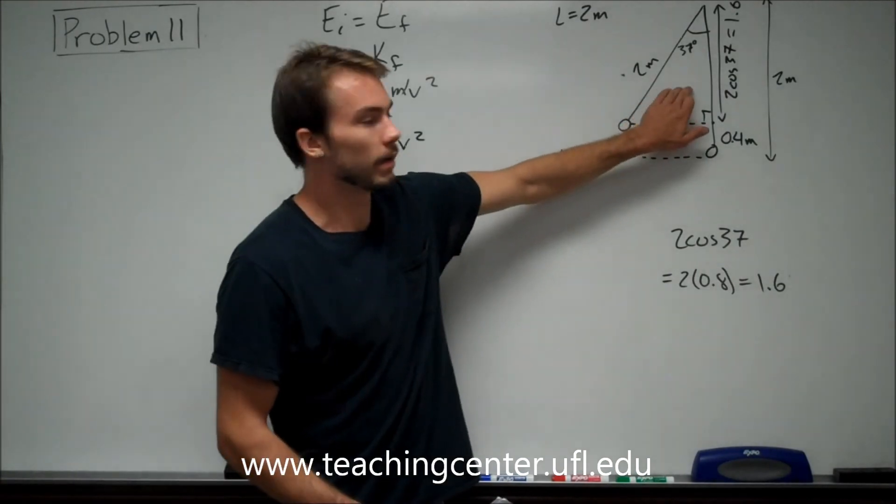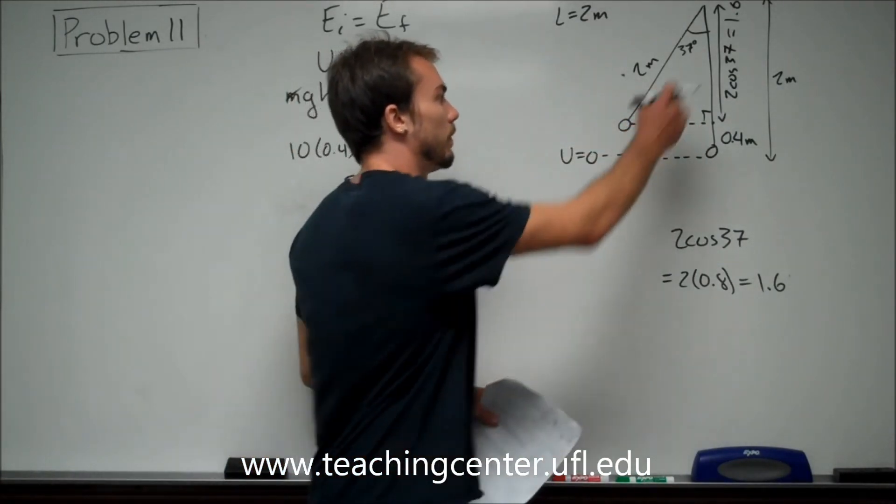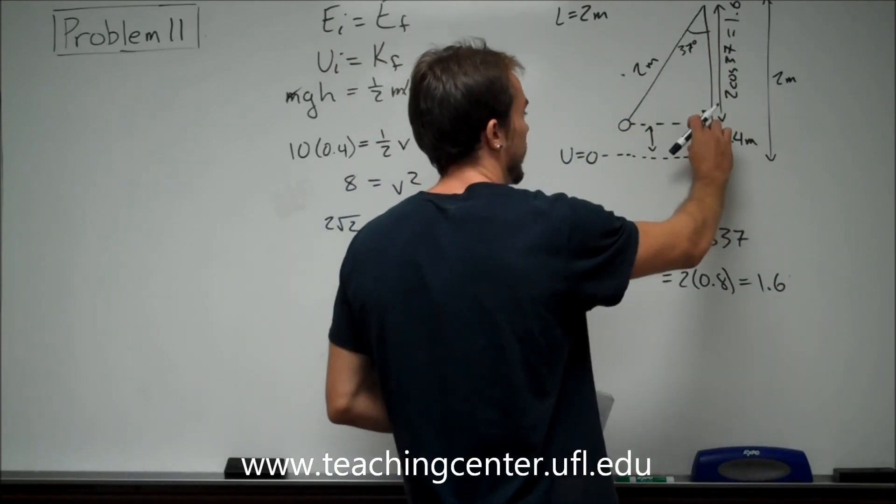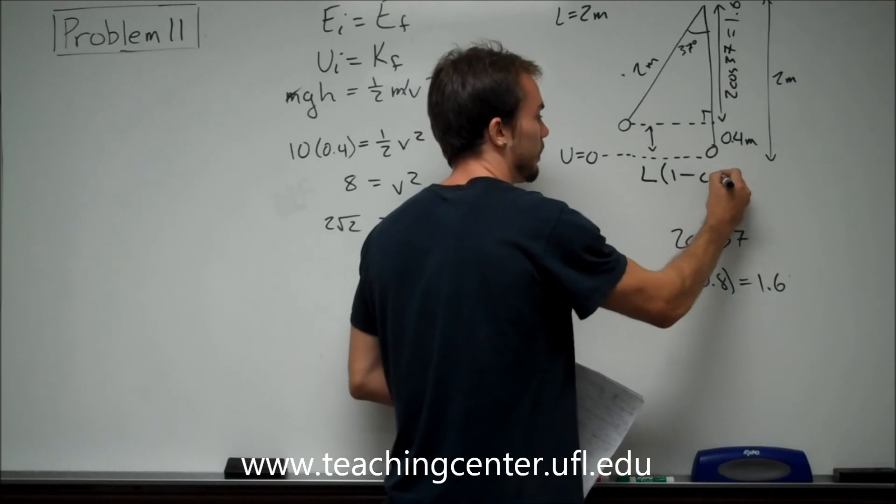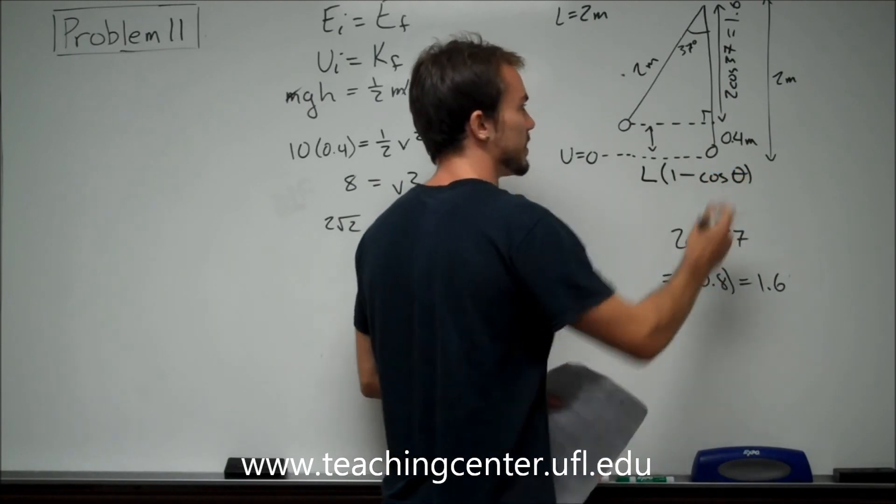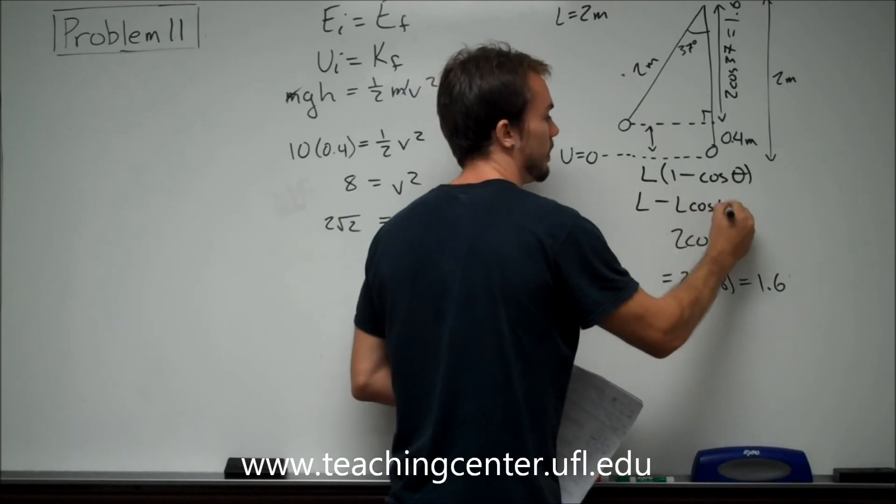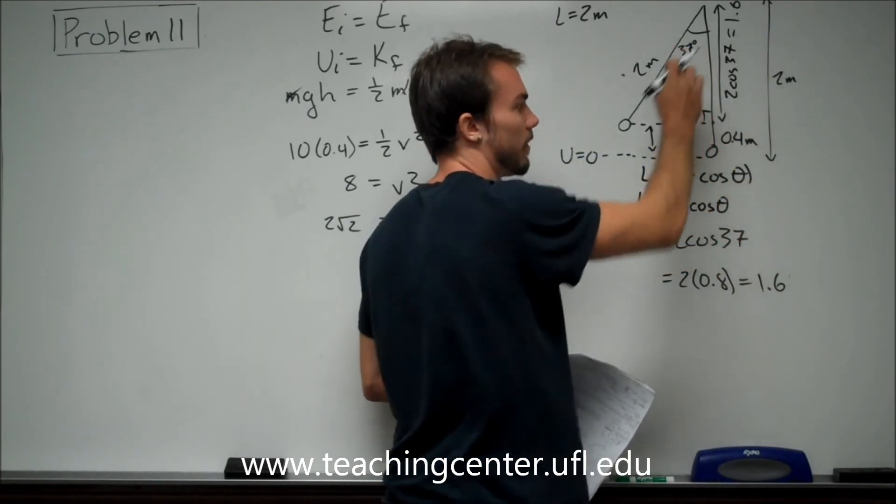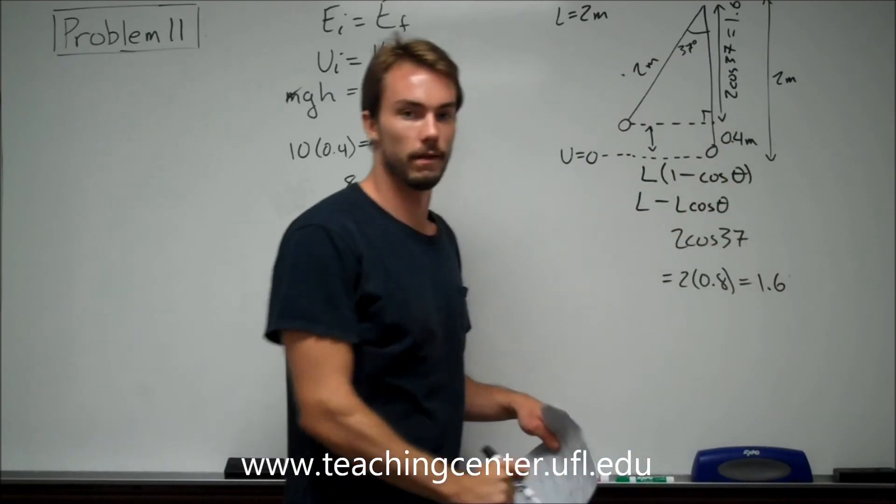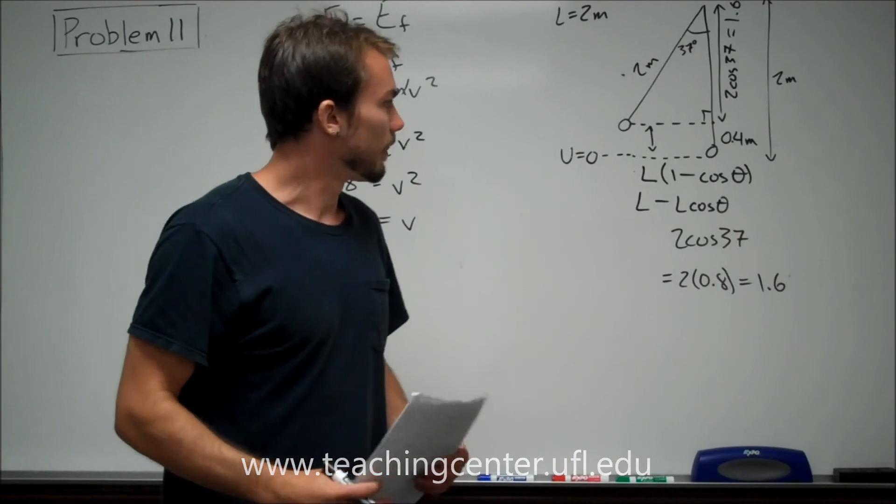And don't forget this little trick. They like this, I've seen this many times on many different tests. What you can do is you can say that this height right here, they like to write it as L times 1 minus cosine of theta, which is just our, if you distributed L minus L cos theta, which is we took our 2 and subtracted 2 times cosine of our angle, and that's what we got our answer as. So this is a nice little trick to remember on your tests. And that's the end of the problem.